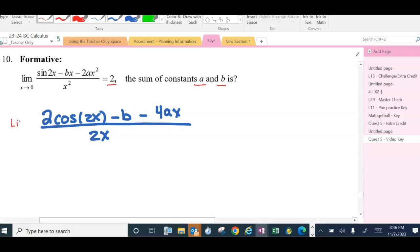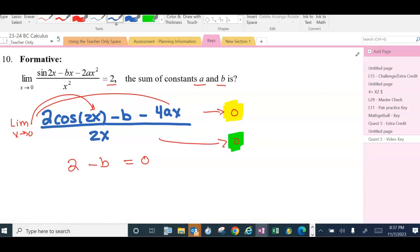Notice if I evaluate the limit as x approaches 0, this is going to be 0, so this must be 0 in order to ultimately get an answer of 2. When I plug a 0 in here, cosine of 0 is 1, so I have 2 minus b. 2 minus b must equal 0, because I know this numerator has to be 0 if this denominator is 0. That means b is equal to 2.